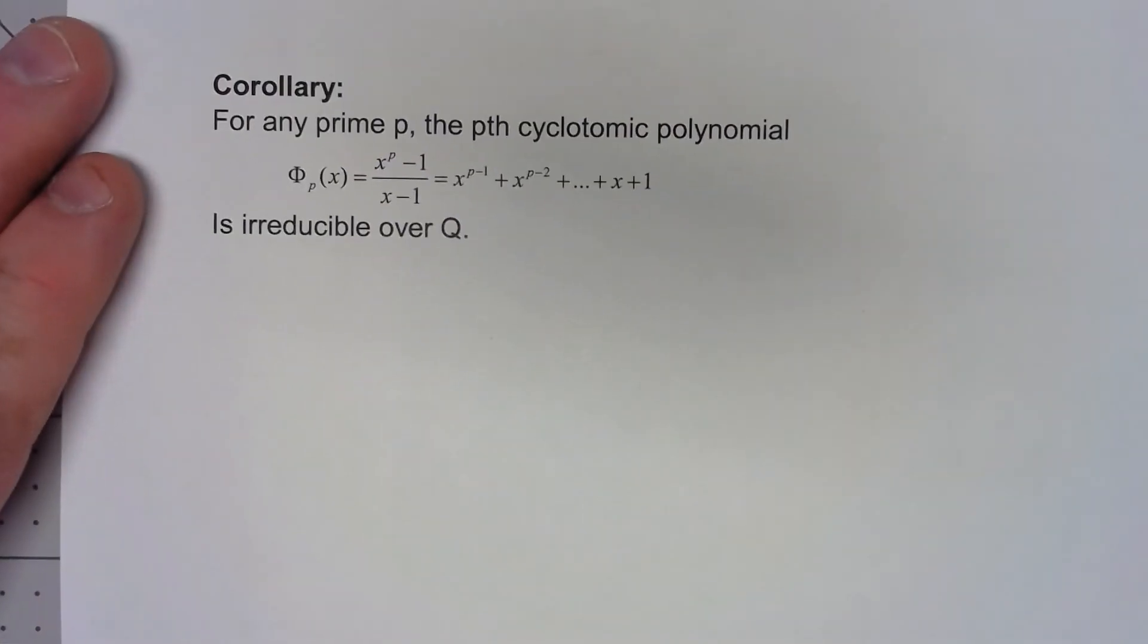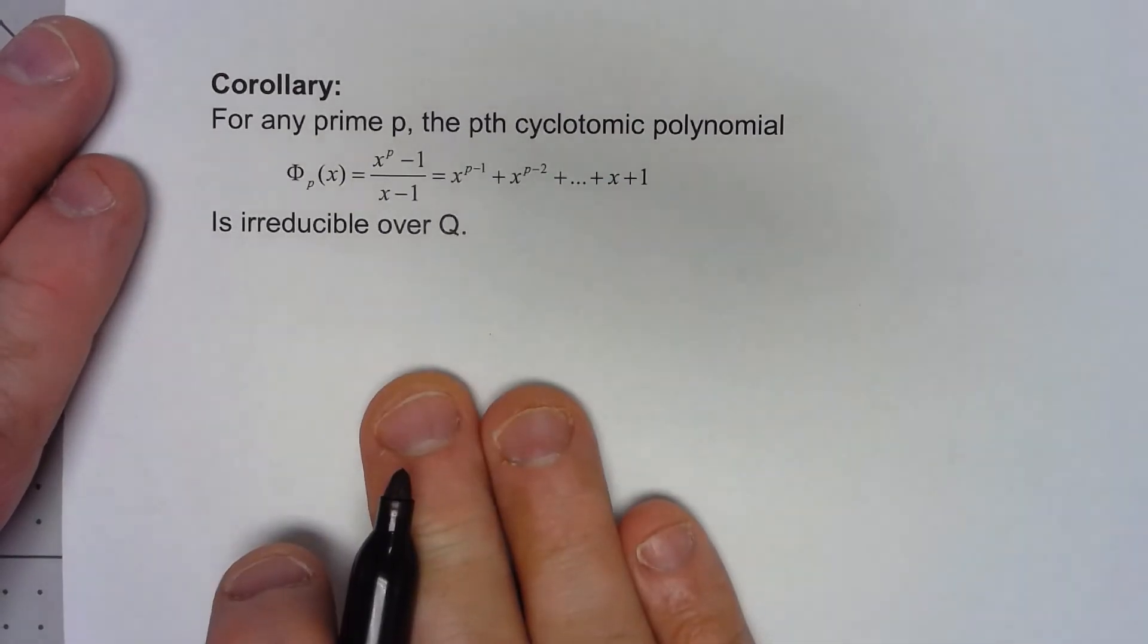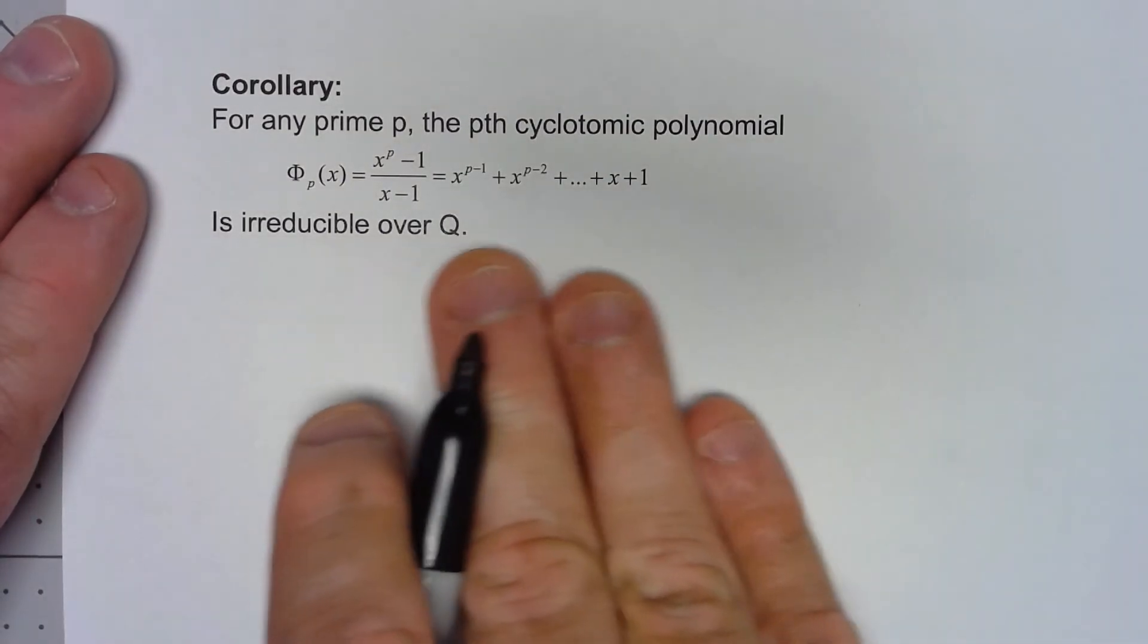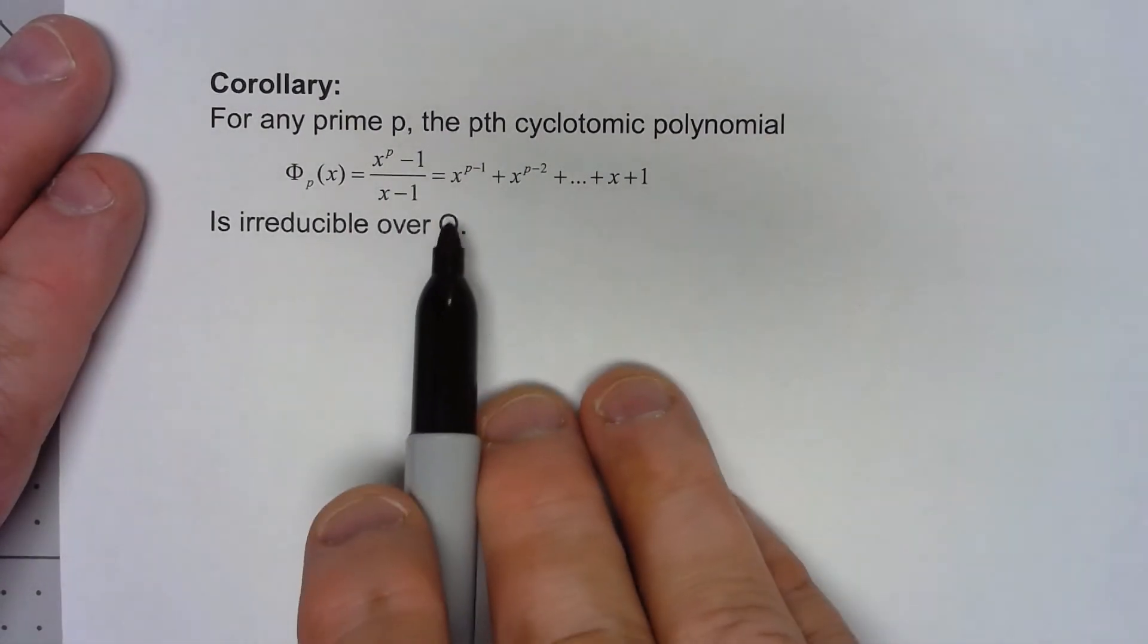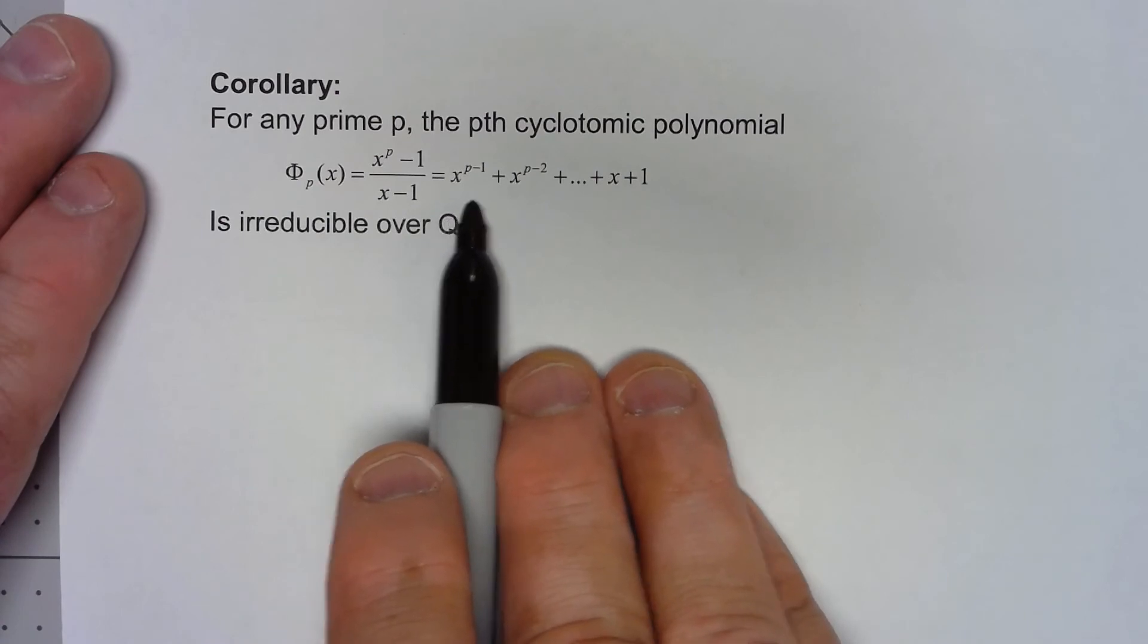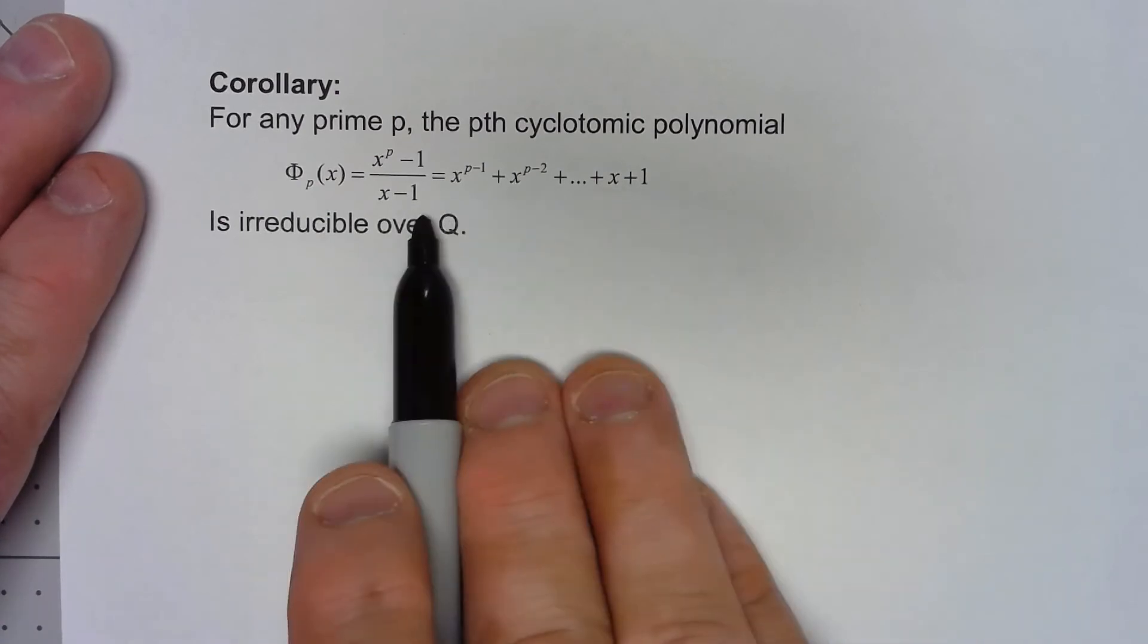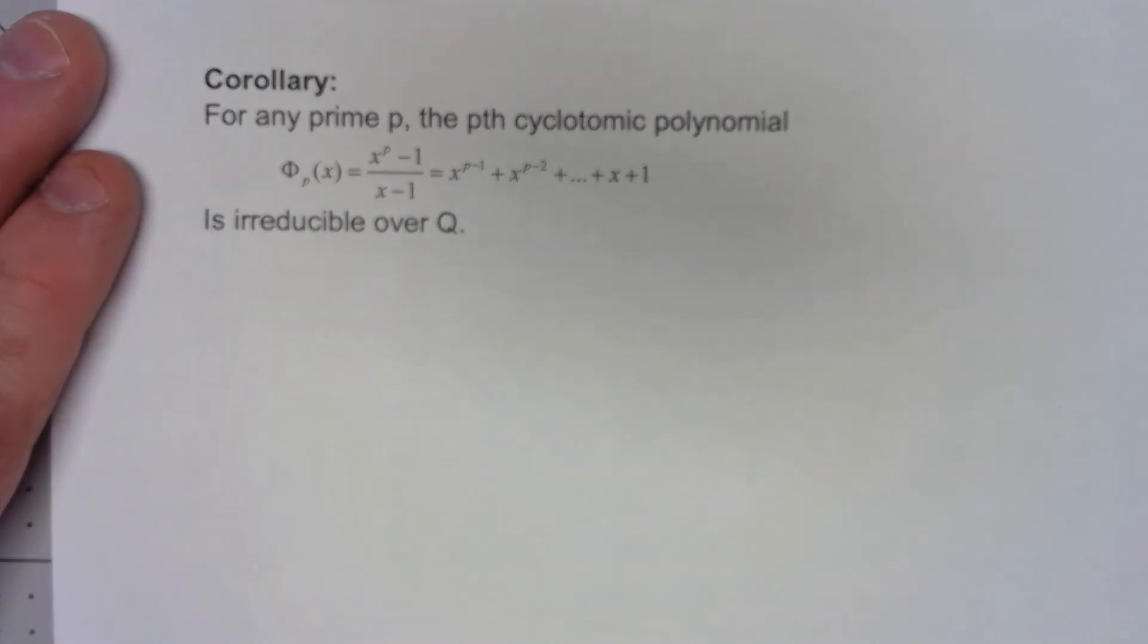One final little thing here, and it's a little bit clever the way this is proved, is that if we've got a particular polynomial which is (x^p - 1)/(x - 1), which when you do that division just ends up being the sum of all the different powers of x less than p, that polynomial, no matter what the prime is, is going to be irreducible over Q.